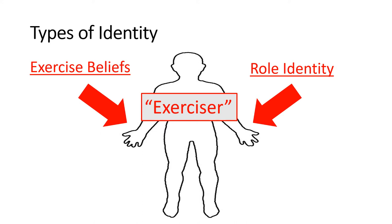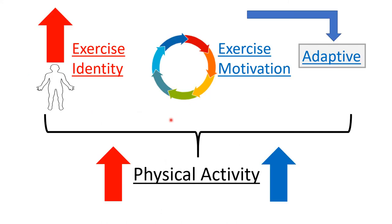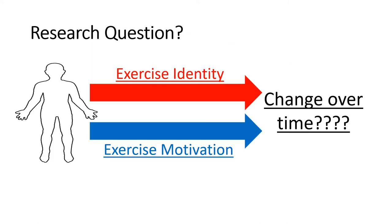In the following study, they use two different types of identity to measure identity: exercise beliefs and role identity. Exercise beliefs is what types of beliefs the individual has about exercising, and role identity is how the individual comes to identify with the activity itself. What the literature is showing is that higher forms of exercise identity in combination with certain adaptive forms of motivation should overall be increasing physical activity, and that is where the research question comes in — looking at how these two things in conjunction can change over time.